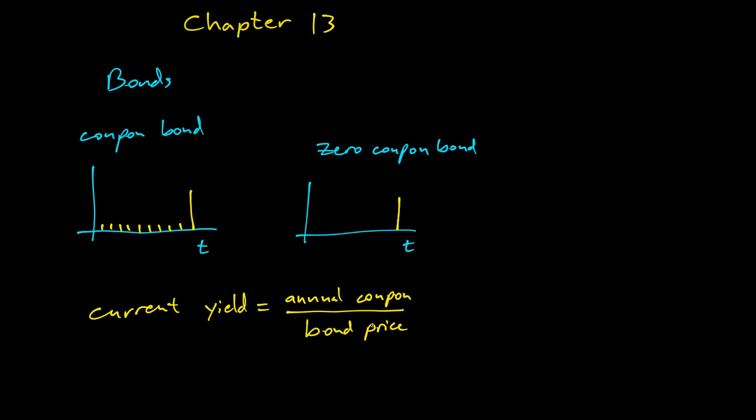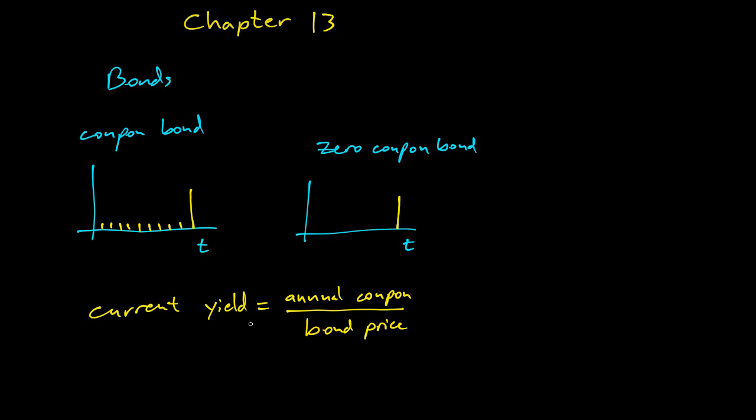But this is not a great measure because zero coupon bonds have no current yield, but they're obviously valuable. If you can buy a zero coupon bond at a good discount, it'll be worth money because it's paying back more money than you paid at some point in the future. So we need a better measure than this.